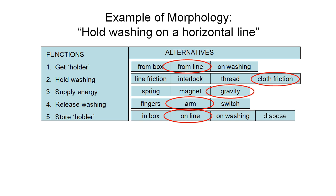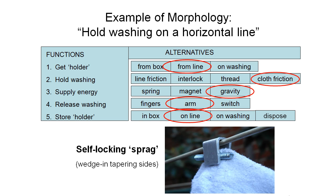Let's have a look at another option: getting the holder from the line, using cloth friction, supplying energy via gravity, releasing the washing with our arm, and storing the holder on the line. This is what we would call a self-locking sprag. We have a piece of metal with slightly tapered sides tapering inward going down, and a bit of all-thread like the end of a cut bolt. If we put the washing into the end of this C-shaped clip, put the sprag in there and pull down, it tensions up as it's drawn toward the narrow end of the clip, creating friction and flexing out the clip slightly, holding the washing in place. So gravity is doing the job — that's quite a novel solution.